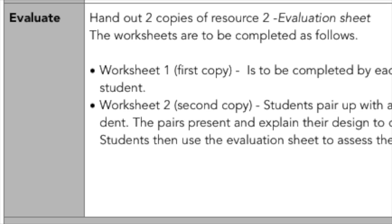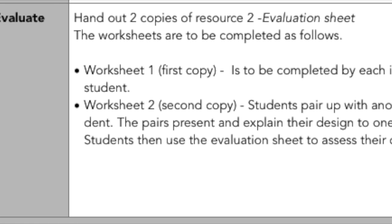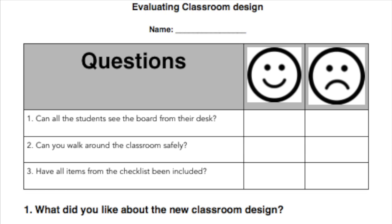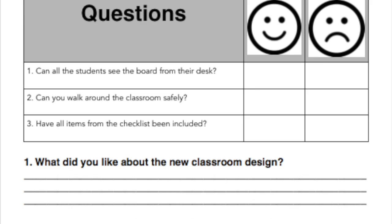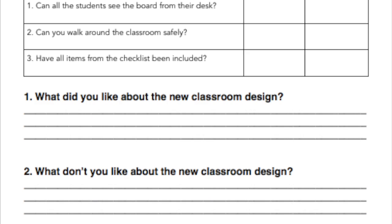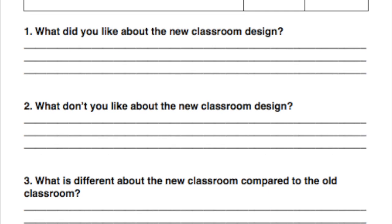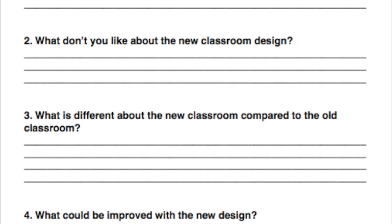In Stage 6, the last stage of the product development, the students are given an assessment evaluation sheet to evaluate their own design and their peers' design. Each student is required to evaluate two other classroom designs to give their peer critical feedback. The students indicate what they liked and disliked about the designs, compare the old and new classroom designs, and give ideas for improvement. Students use the evaluation sheets as a way of reflection, critically considering their own and peers' designs against the criteria, which enables students to recognise their own strengths and weaknesses.